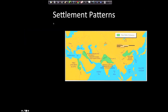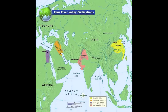Let's talk about settlement patterns quickly — where did people settle and why? I'm referring to the first ancient civilizations. We have one near the Nile in Egypt, the Tigris and Euphrates rivers in Iraq, the Indus River in India, and the Yellow River in China. All these ancient civilizations developed independently, and they all developed near rivers.